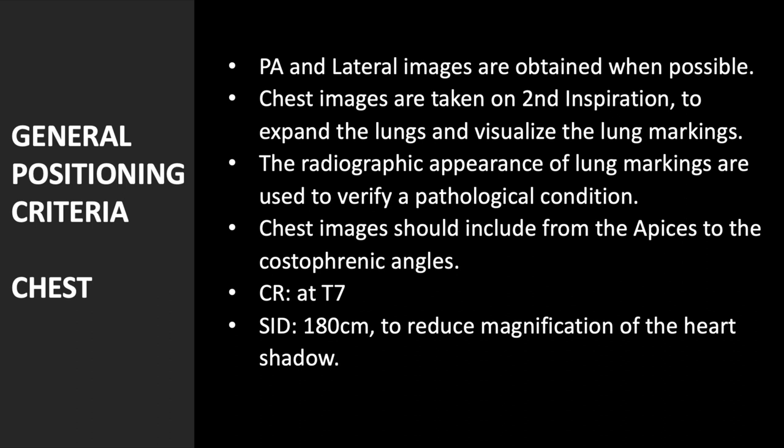PA and lateral images are obtained when possible. Chest images are taken on second inspiration to expand the lungs and visualize lung markings. The radiographic appearance of lung markings is used to verify pathological conditions. Chest images should include from the apices to the costophrenic angles, with the central ray at T7 and SID of 180 cm to reduce magnification of the heart's shadow.